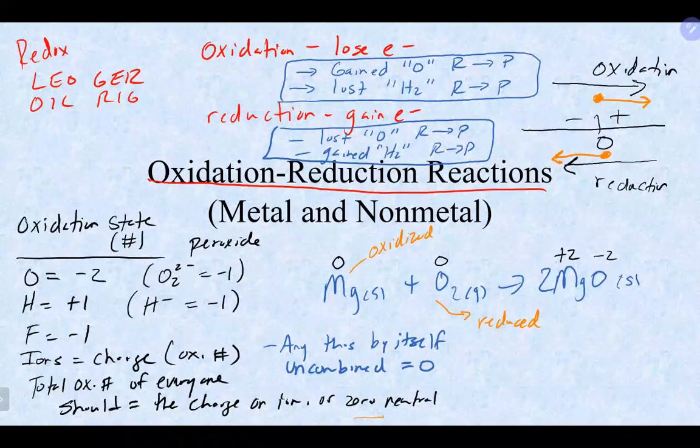The total oxidation numbers should equal the charge on the ion if it's an ion, or zero if it's a neutral compound.